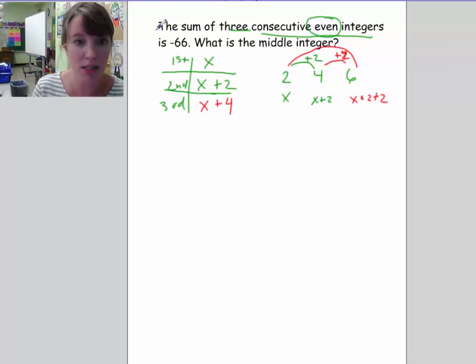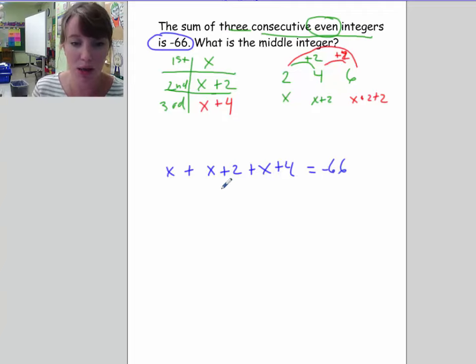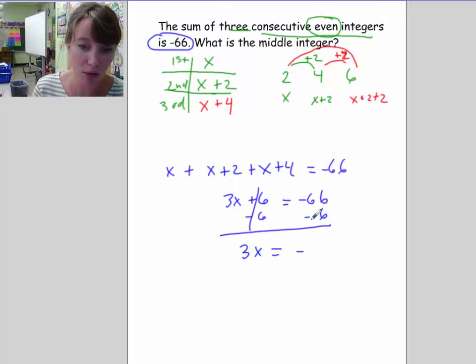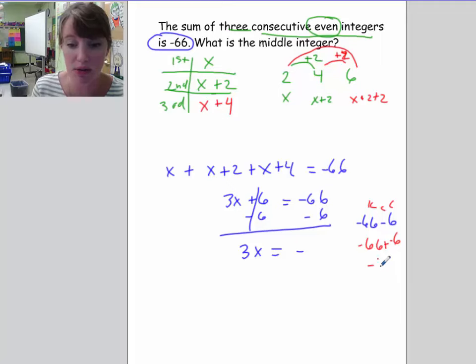Now the sum of all these is negative 66, so I'm ready to put it back into the equation. Now let's go ahead and combine like terms. So I have 3x plus 6 is equal to negative 66. Subtract 6 from both sides. We have 3x is equal to negative. So be careful here because it's negative 66 minus 6. So if I use keep, change, change, it would be negative 66 plus negative 6, which is negative 72. So 3x is equal to negative 72. Divide by 3 here.